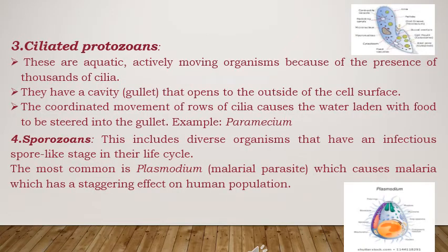The third group of protozoans is ciliated. As the name shows, these have cilia all over the body — thousands of cilia present all over the body. Cilia are brush-like structures used for locomotion. These are aquatic animals. They have a cavity that opens outside of the cell surface, and the cilia coordinate with the gut to take in food — for example, in Paramecium.